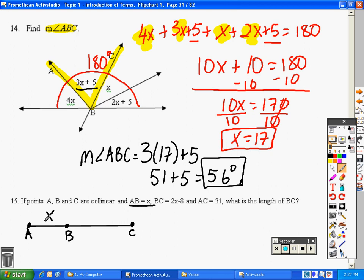A, B is X. B, C is 2X minus 8. And the whole thing is 31.